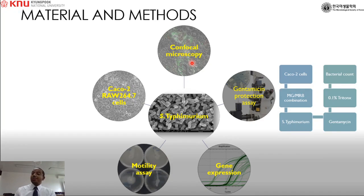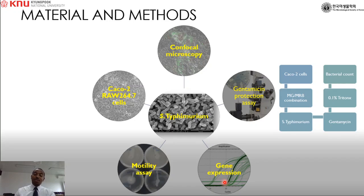To achieve our goals we used different materials and methods. We used three strains of Salmonella Typhimurium: one standard ATCC 14028 strain and two field isolates from clinical infections of pigs. We used Caco-2 epithelial cells and RAW 264.7 macrophage cells to determine inhibition of adhesion, invasion, and intracellular survival using the gentamicin protection assay. Confocal microscopy confirmed the presence or absence of intracellular bacteria. We also analyzed quorum sensing and other virulence factor genes using quantitative RT-PCR and performed motility assays.